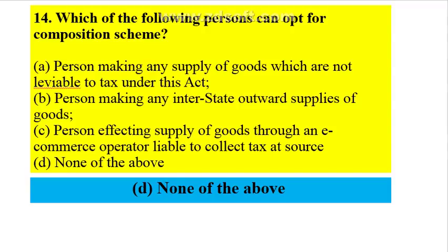Which persons can opt for composition scheme? Those with aggregate turnover less than 1 crore are eligible. However, the following are excluded: persons making supply of goods not liable to tax under the Act, persons making any interstate outward supply of goods, and persons affecting supply of goods through an e-commerce operator. So none of those persons qualify.